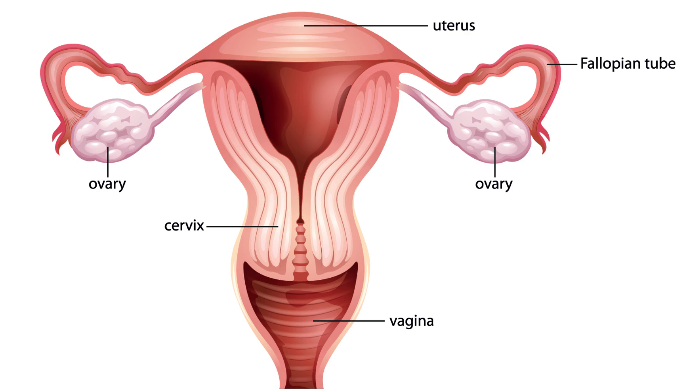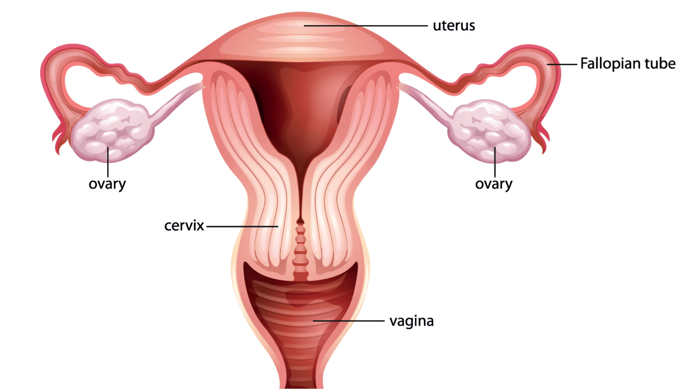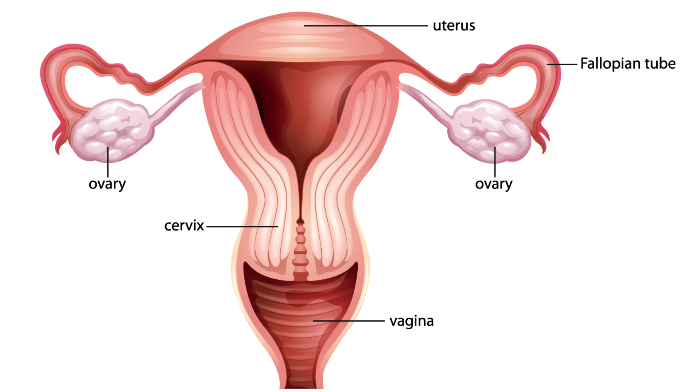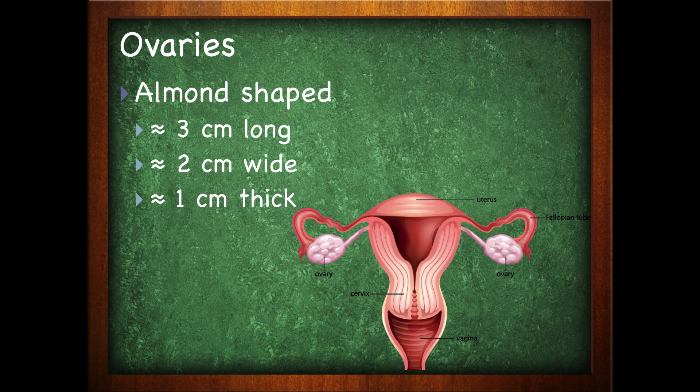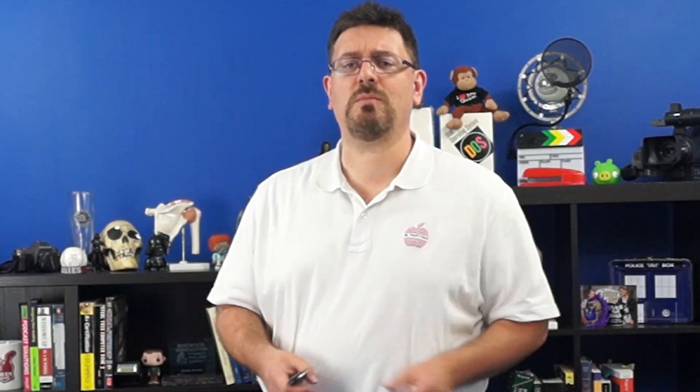The ovaries, as far as appearance go, are around three centimeters long, two centimeters wide, and about a centimeter thick. Depending on who you read, they might give different numbers — we're talking approximations here. This is anatomy, this is the human body, so it's always by and by, at large, with exceptions.